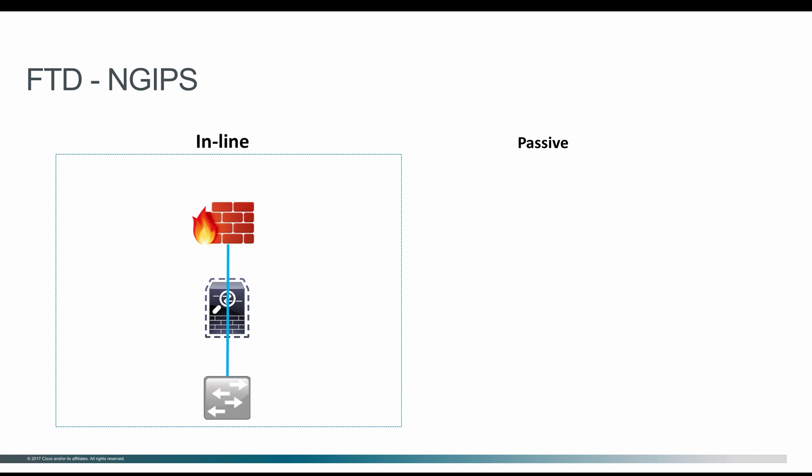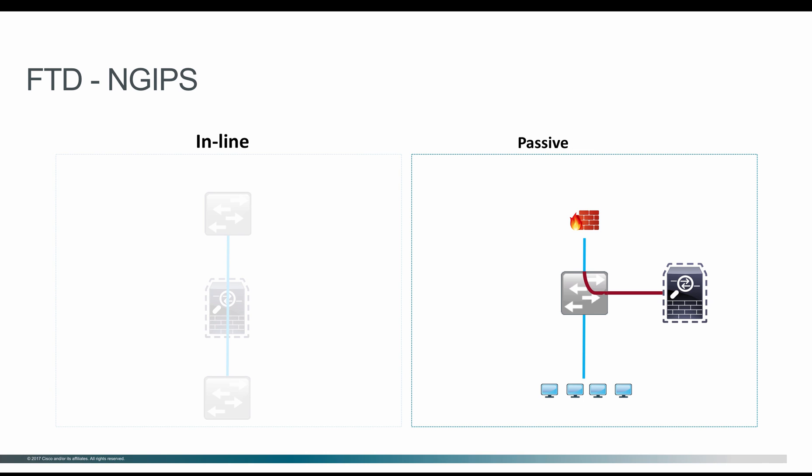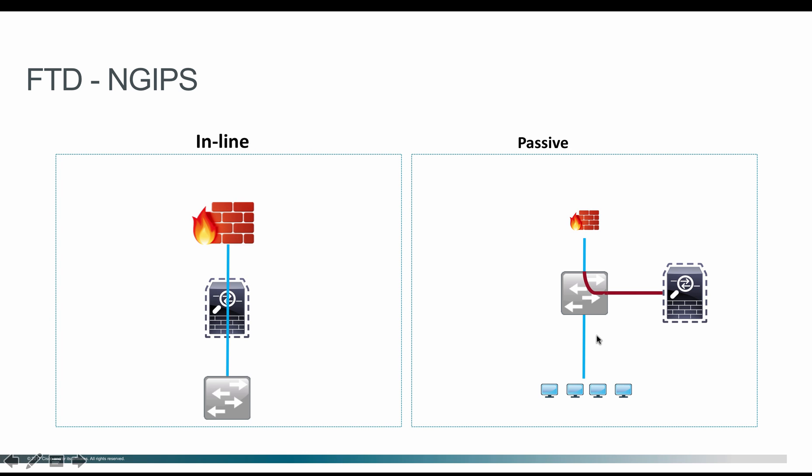In passive mode, the FTD sits alongside the switch. On the switch, you configure a SPAN port where a copy of packets received on a particular interface is copied and sent to the Firepower Threat Defense.